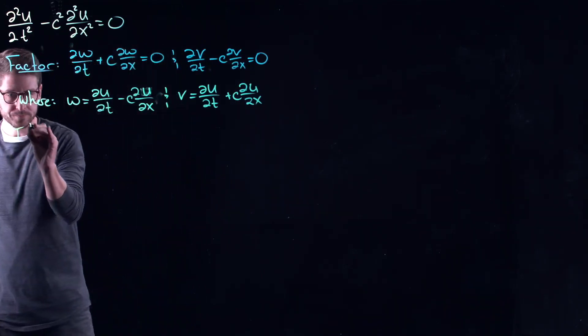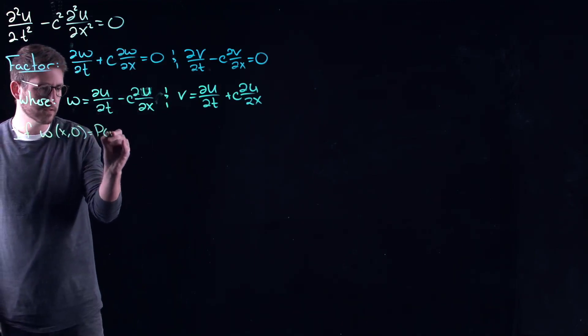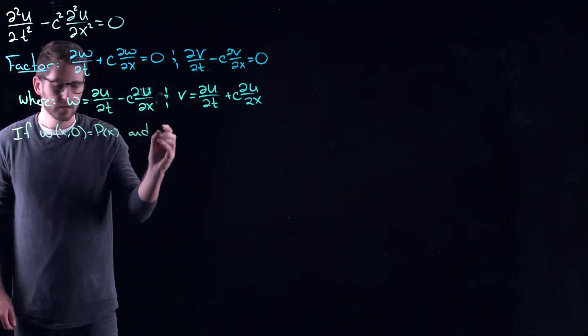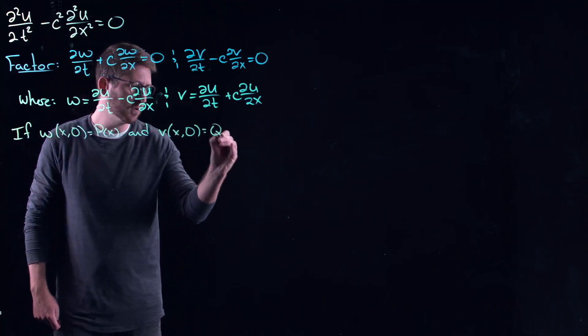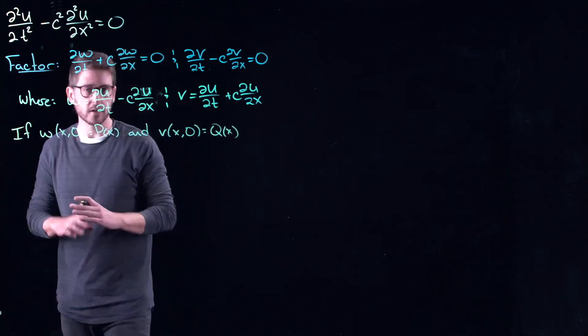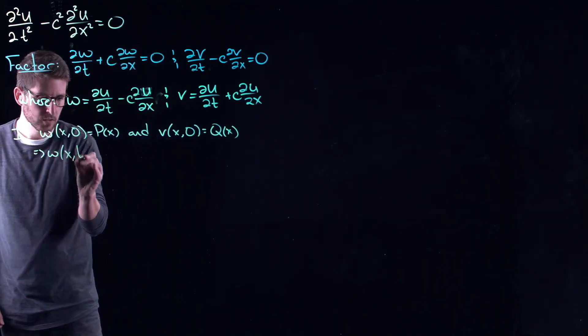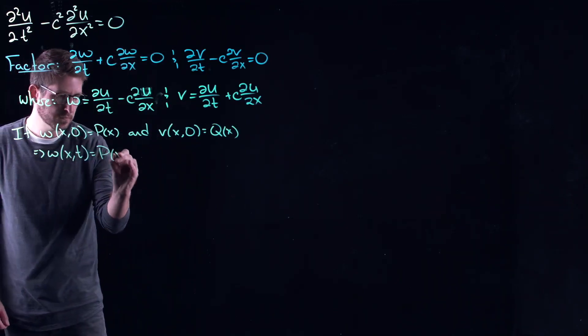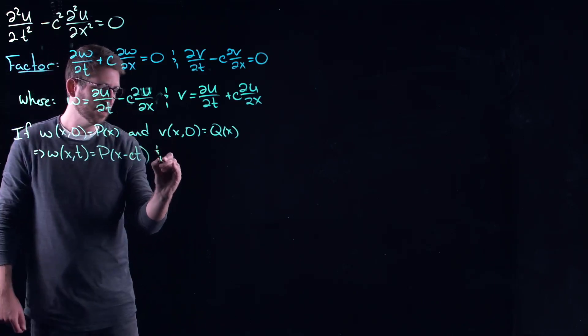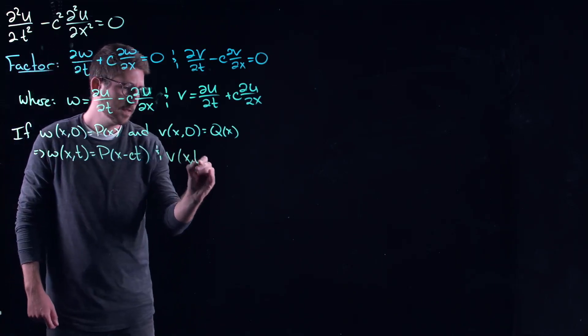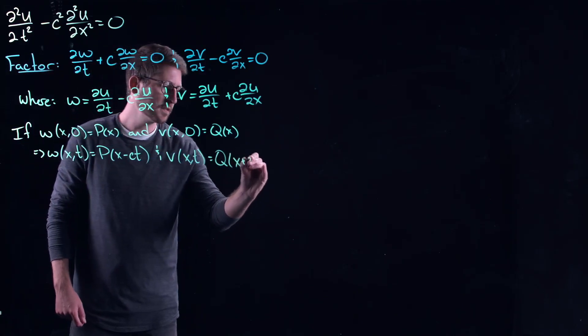and v of x comma zero equals q of x, let's just use p and q here, they could be different. This tells me that w is just p of x minus ct because c is constant again. And v is q of x plus ct.